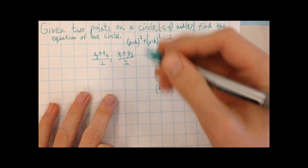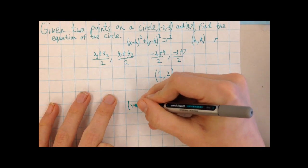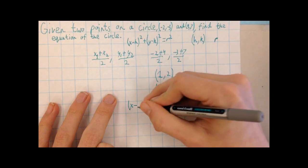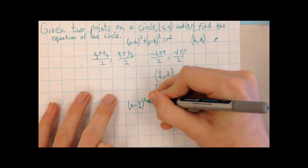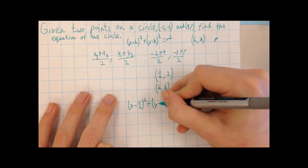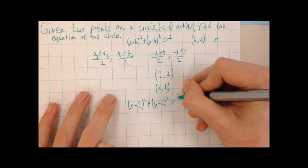Now if we go back up to our answer, we start filling some information in. We have x minus 1 squared plus y minus 2 squared equals r squared.